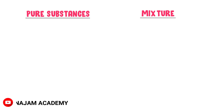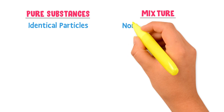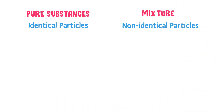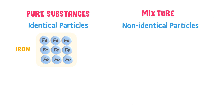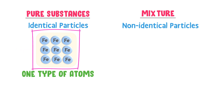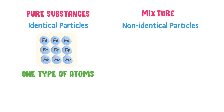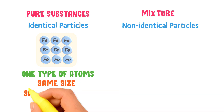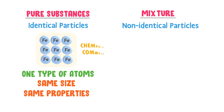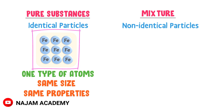A pure substance is composed of identical particles, while a mixture is composed of non-identical particles. For example, consider a pure sheet of iron — it is made up of only one type of atom. All atoms are the same, they have the same sizes and same properties, and are chemically combined together to form a pure sheet of iron. Therefore, this sheet is a pure substance.